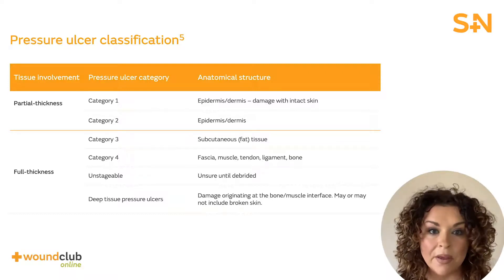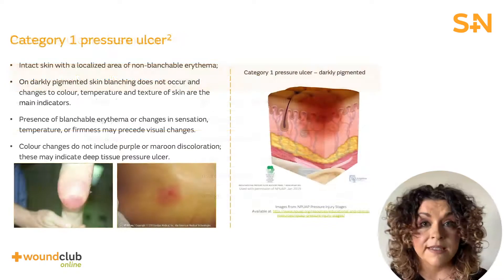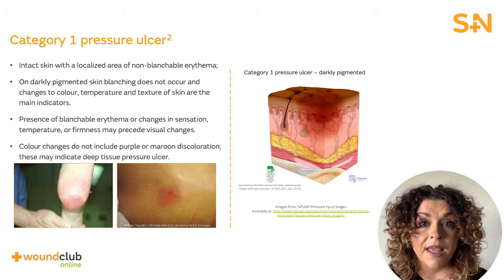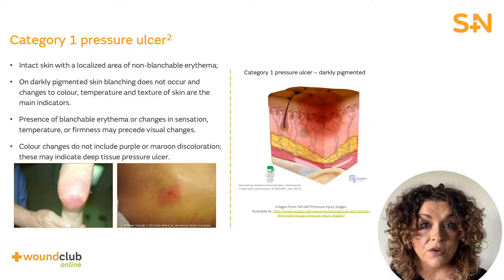It's important to remember that the tissue involvement is not necessarily an indicator of wound depth. For example, a shallow wound over the malleolus may have exposed bone. Category 1 pressure ulcers are those with the skin remaining intact. They're characterised by an area of local, non-blanching erythema. It's worth noting that on darkly pigmented skin, this may appear differently. There may also be changes in sensation or temperature or the firmness of the skin.